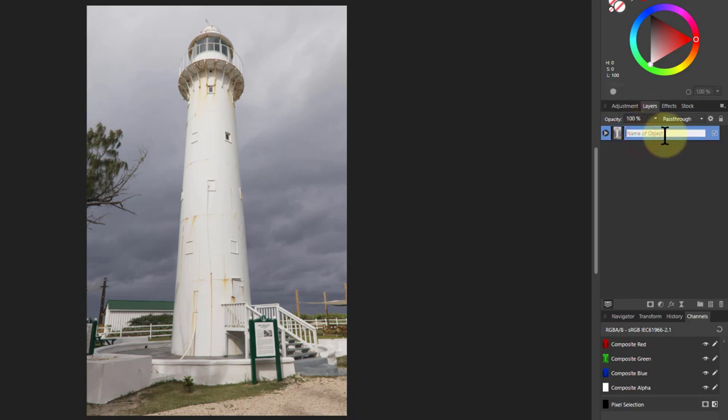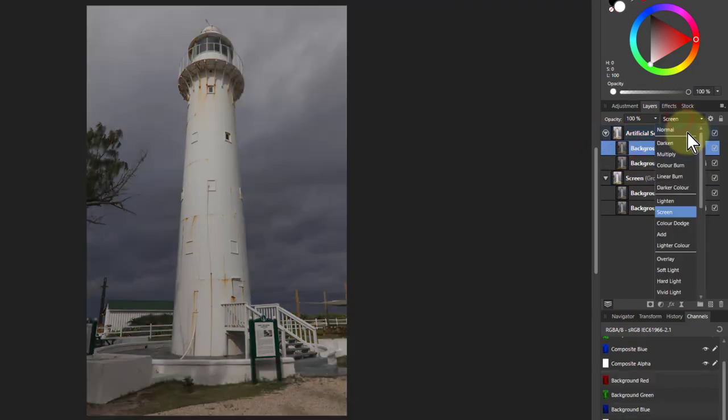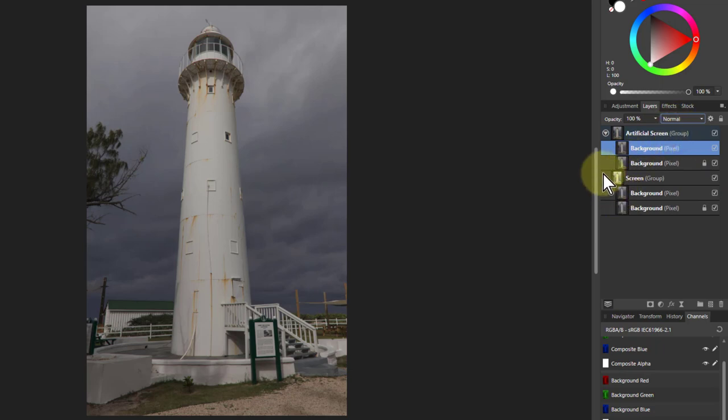And we'll call this one screen. So we've got this one here, the screen blend mode. I'm going to hit Control J to duplicate that as well and call this one artificial screen. So now we've got the two layers again. What we're going to do now is for the moment we'll just leave the top layer as normal.